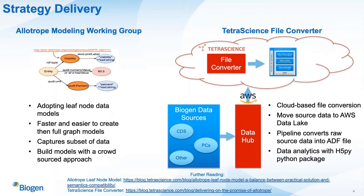This strategy is delivered through the Allotrope Modeling Working Group. The Modeling Working Group has adopted a leaf node data model, also known as a tabular data model approach. These data models are faster and easier to create than the traditional full graph approach. Instead of trying to capture every instrument output, we are now only focusing on a subset of the instrument data that is of utmost importance to our SMEs — the scientists who are using the information to make business decisions every day. These models are able to converge on a consensus terminology or ontology through a crowdsourced approach.